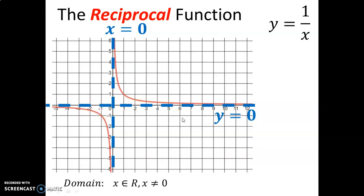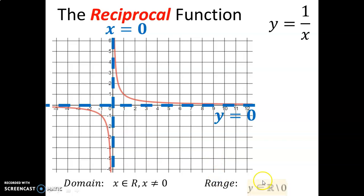We learned that the domain is x can be any real number except x cannot be 0, because the graph exists everywhere except at the asymptote. Likewise for the range, y can take on any real number except it cannot be 0.